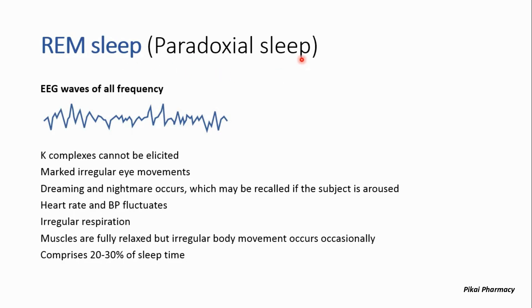REM sleep is also known as paradoxical sleep. The EEG shows waves of all frequencies, and K-complexes cannot be elicited at all. This type of sleep shows irregular eye movements; dreaming and nightmares occur, and dreams can be recalled if the person is awakened. Fluctuations in blood pressure and heart rate occur, and irregular respiration is observed.